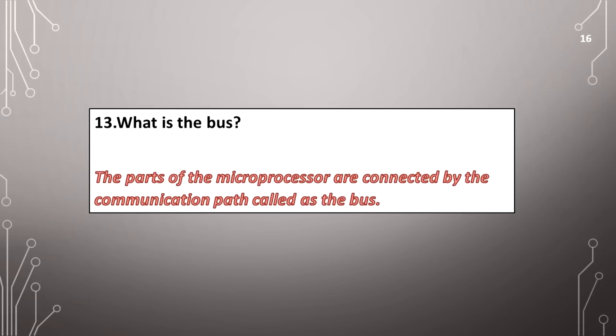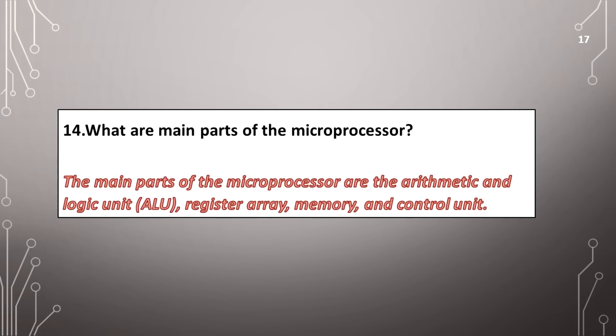What is the bus? The parts of the microprocessor are connected by the communication path called the bus. What are the main parts of the microprocessor? The main parts of the microprocessor are the arithmetic and logic unit, register array, memory, and control unit.